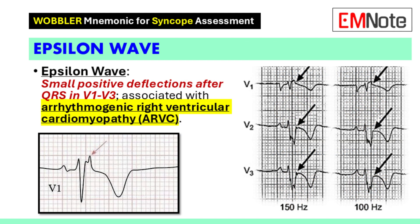The epsilon wave is associated with arrhythmogenic right ventricular cardiomyopathy. This wave appears as small positive deflections after the QRS complex in leads V1 through V3. Its presence may indicate an underlying structural heart disease that requires further investigation.